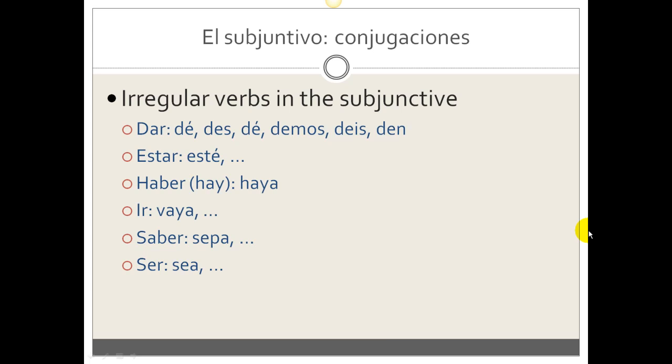There are some irregular verbs in the subjunctive. For example, dar: the forms would be dé, des, dé, demos, deis, den. Estar: the forms start with esté, esté, estés, esté, estemos, etc.